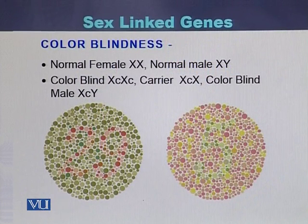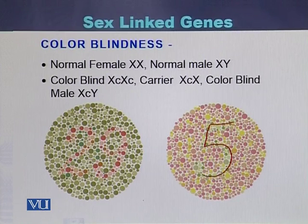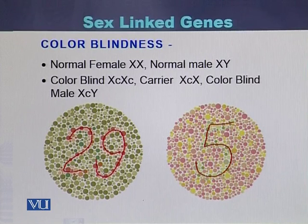Color blind individuals cannot distinguish between green and red colors. If we show them test figures, they cannot identify that the number 5 is written on one diagram, and they cannot identify that 29 is written on another diagram. So color blindness is a condition in which individuals cannot distinguish between green and red colors.